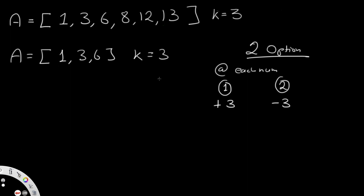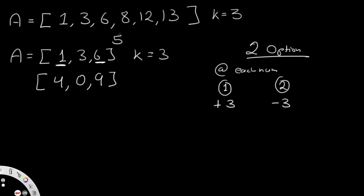The main goal is to perform either operation 1 or operation 2 on every element, then find the range between the maximum and minimum of the result. For example, if we do 1+3=4, 3-3=0, and 6+3=9, the original range was 6 minus 1 equals 5. But after these operations our range is 9 minus 0, giving us 9. So that's not our ideal solution.